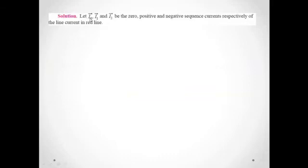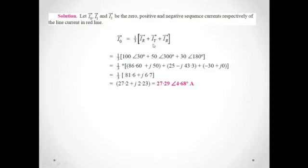We have to find the positive, negative, and zero sequence components, and then add the total currents to find the neutral wire current. The zero sequence component is the summation of the total current divided by 3. Here IR = 100, IY = 50, IB = 30 — we sum all three and divide by 3 to get its value.